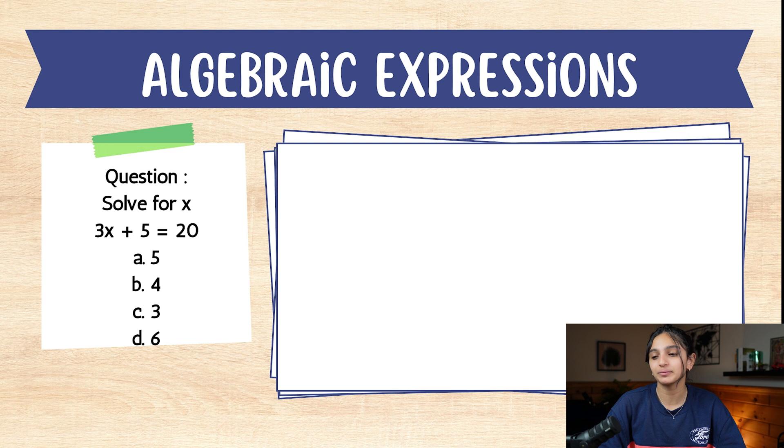Now we are officially done with the reading part of the MAP test. Now let's move on to the math part. There are two algebraic expressions, two proportion questions, and two geometry questions. Question number 1: algebraic expressions.